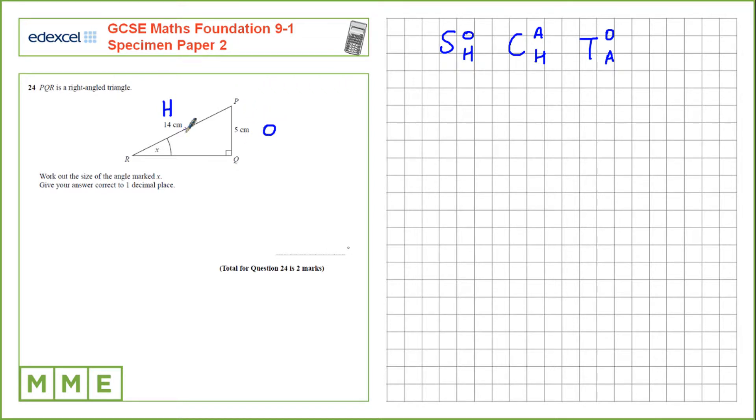We have values for both the opposite and the hypotenuse, so we're looking for the ratio that includes both of those, and that's sine.